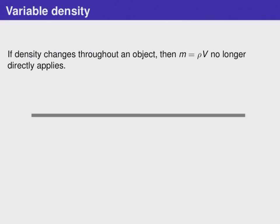However, if an object has changing density, that is, it's not the same at all points throughout the object because there's more mass in some areas than others, then the equation m equals rho times V doesn't directly apply.